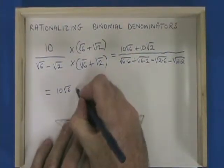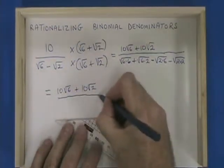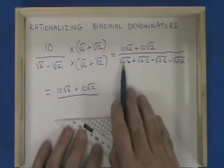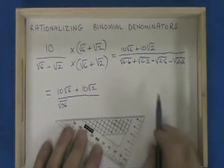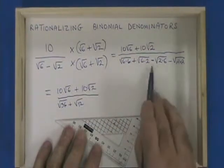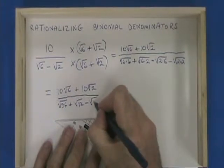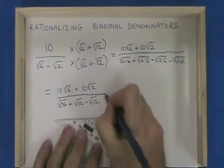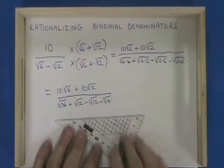I'll write my 10 root 6 plus 10 root 2. Now, the square root of 6 times 6 is the square root of 36. The square root of 6 times 2 is the square root of 12. The square root of 2 times 6 is also the square root of 12, but this one's being subtracted. And the square root of 2 times 2 is the square root of 4, also being subtracted.